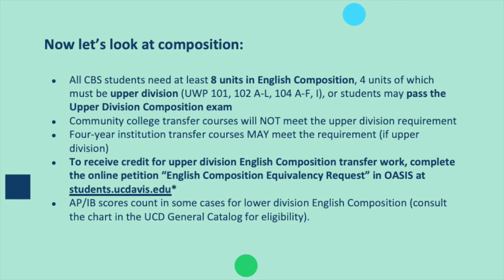Now let's look at composition. All CVS students need at least eight units in English composition, four units of which must be upper division — so UWP 101, 102, 104 A-F or I — or students may pass the upper division composition exam. Community college transfer courses will not meet the upper division requirement. Four-year institution transfer courses may meet the requirement if upper division. To receive credit for upper division English composition transfer work, complete the student online petition titled 'English Composition Equivalency Request' in OASIS at students.ucdavis.edu. AP and IB scores count in some cases for lower division English composition; consult the chart in the UC Davis general catalog for eligibility.